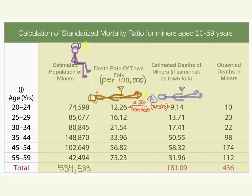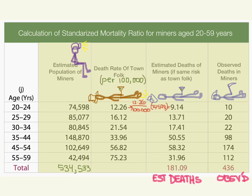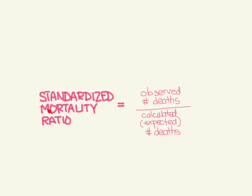Now we can see how many miners actually did die and take the real numbers. These are the real observed miner deaths, and we can add these up. So we have the estimated number of deaths and the observed number of deaths. What we can now calculate is called the standardized mortality ratio. The SMR, or standardized mortality ratio, is the observed number of deaths over the calculated, or expected, number of deaths.